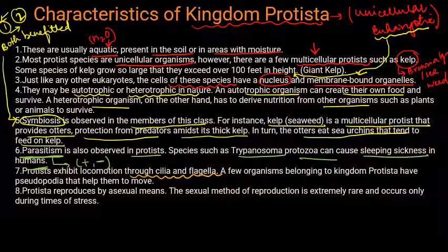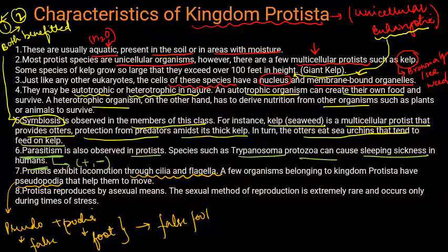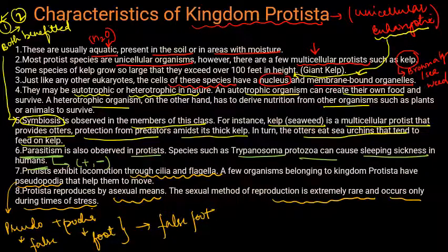Apart from cilia and flagella, some Protists have pseudopodia. Pseudopodia is composed of two parts: pseudo meaning false, and podia meaning foot — so it is a false foot which helps in locomotion. Protists reproduce by asexual means; sexual reproduction is extremely rare and occurs only during times of stress.